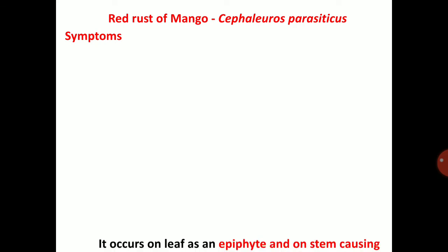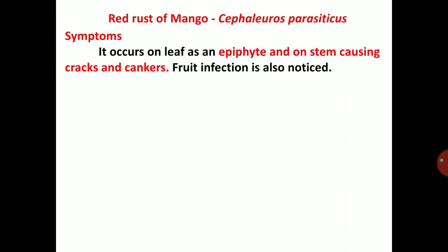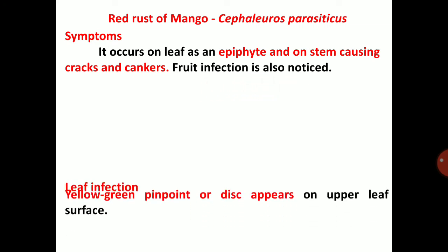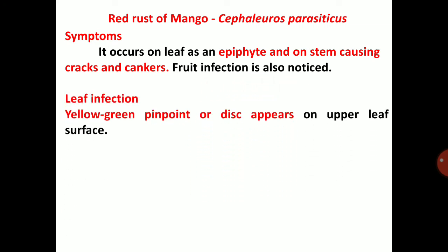Symptoms of red rust of mango: it occurs on leaves as an epiphyte and on stems causing cracks and cankers. Fruit infection is also noticed. Leaf infection is also noticed. Yellow-green pinpoint or disc-shaped spots appear on the upper surface of the leaves.